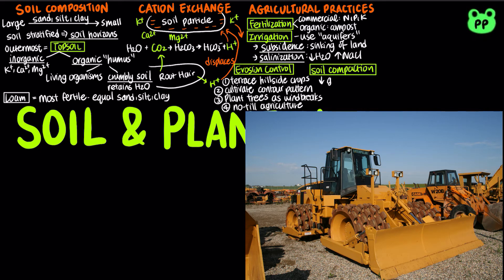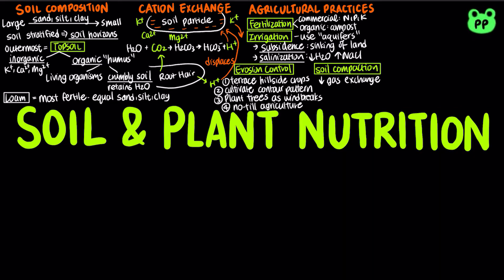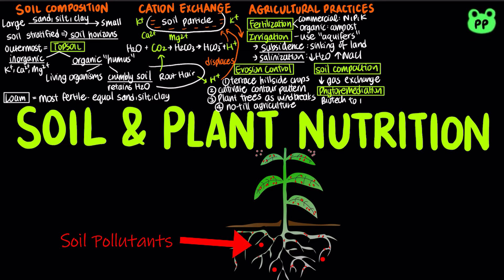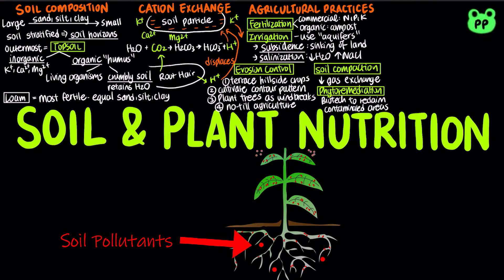Soil compaction from heavy equipment reduces pore space between soil particles, slowing gas exchange and reducing root growth. Some areas are unfit for agriculture because of contamination of soil or groundwater with toxic pollutants. Phytoremediation is a biological, non-destructive technology that reclaims contaminated areas using plants capable of extracting soil pollutants.